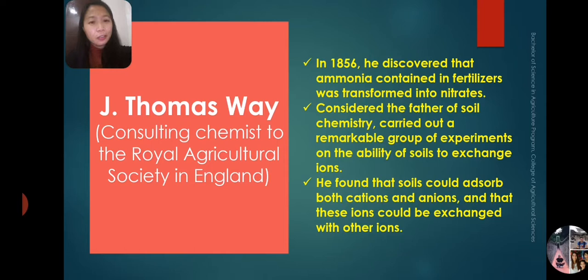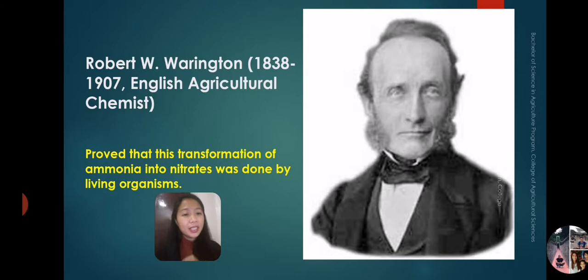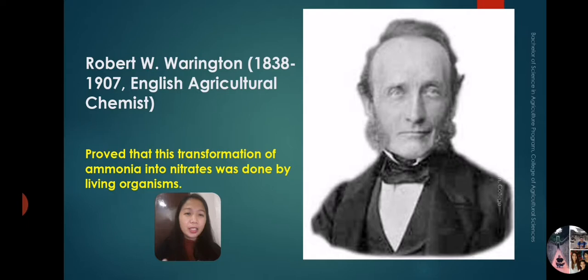Robert Warrington existed from 1838 to 1907 and was an agricultural chemist. He proved that the transformation of ammonia into nitrates — what we call nitrification — was carried out by living organisms. He is credited with that discovery as well.